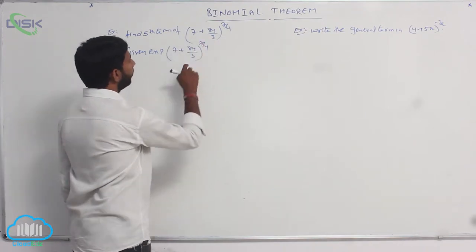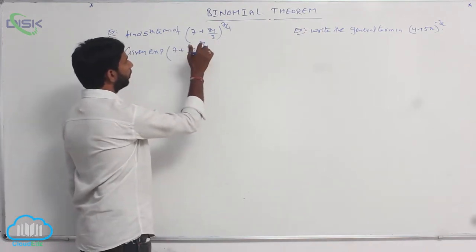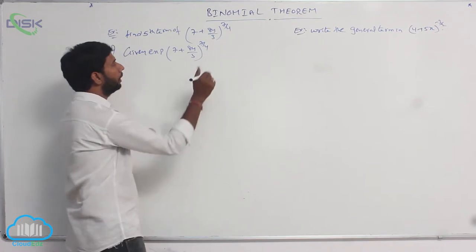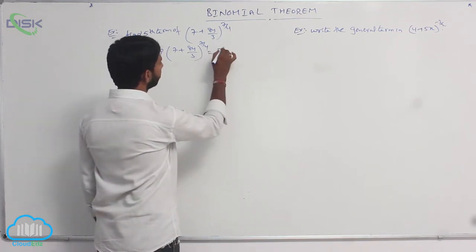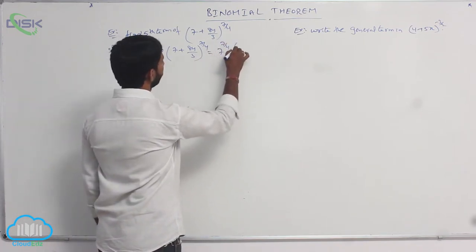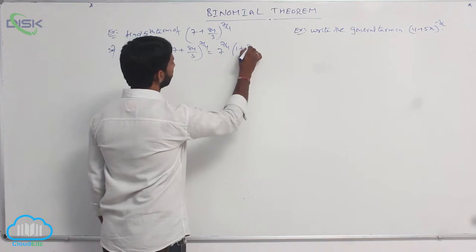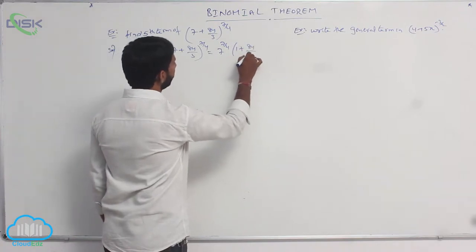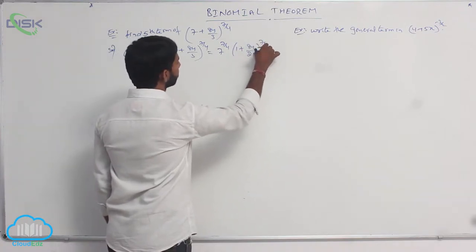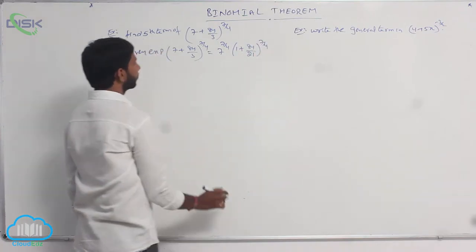Any expansion is of the form (1 + x) whole power n. Here 7 is common, that is 7 power 7/4 of (1 + 8y/21) whole power 7/4.